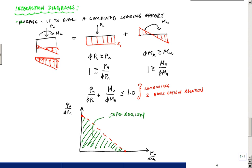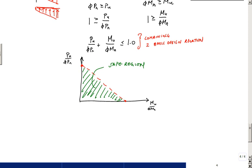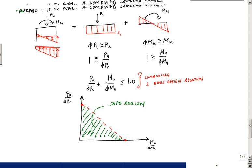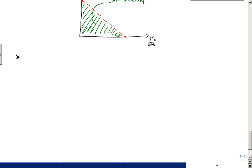That straight-line relationship is what it looks like for timber and steel. But for concrete, we've got some unique characteristics with respect to the strain profile and the capacity. For a given cross section in reinforced concrete, you have to know what the strain profile is and where the neutral axis is to figure out the moment capacity.